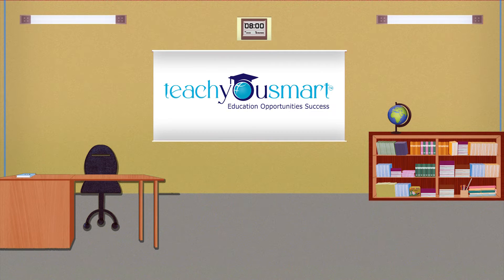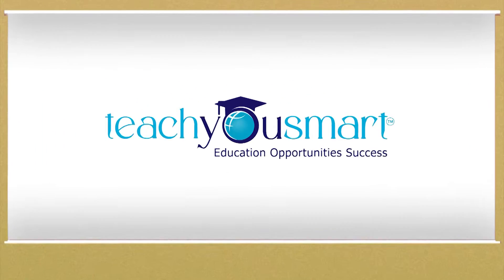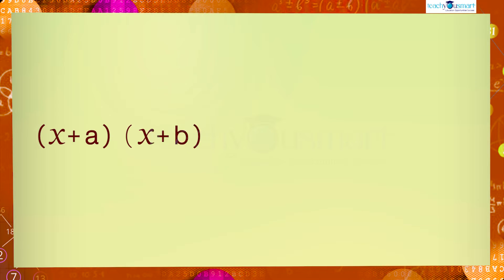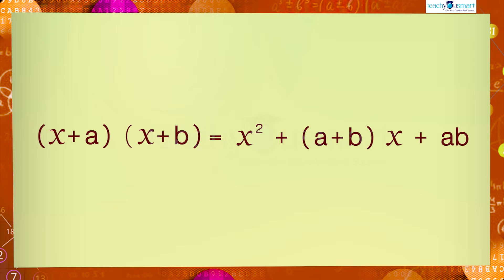Hello students, welcome to Teach You Smart. Let's continue our journey through factorization. Today we are going to discuss the factorization of an algebraic expression using the identity: (x + a)(x + b) = x² + (a + b)x + ab.